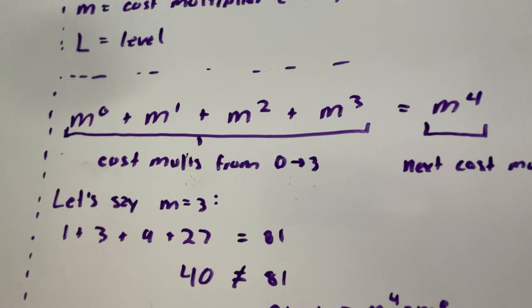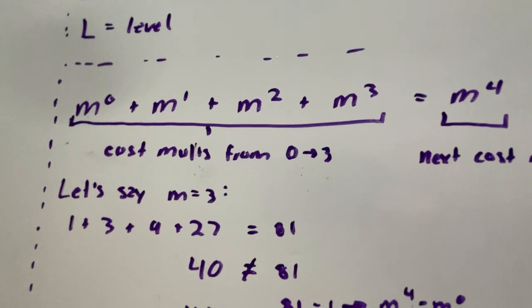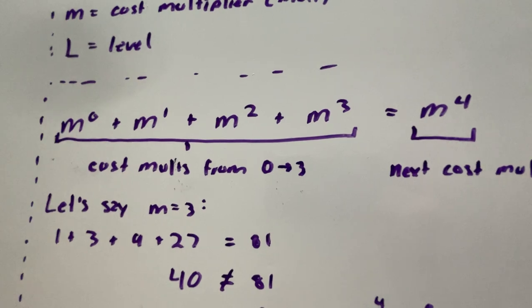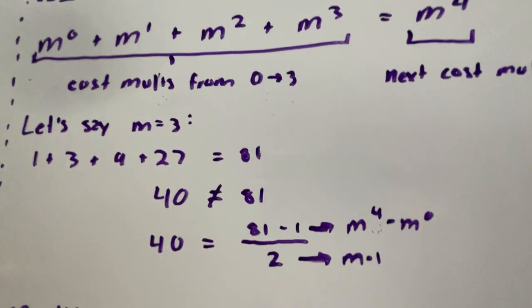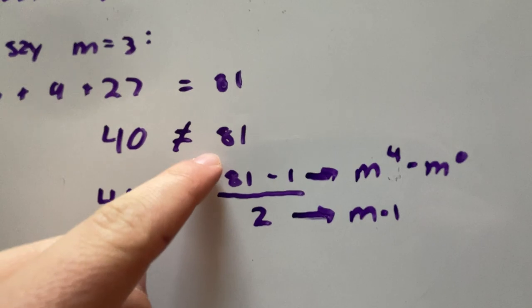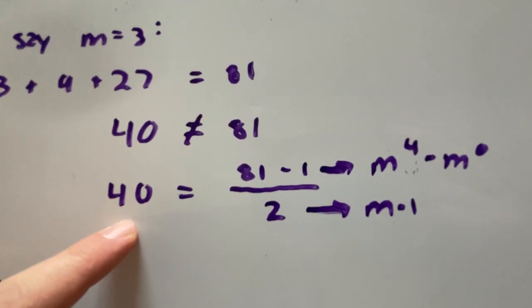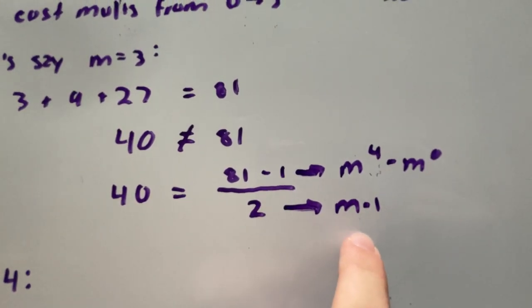But we want our m4 term to equal this term. We want to simplify this because we don't want to take any sort of sums or use for loops in order to solve for what this is. So what we can do is we notice that if we subtract 1 from 81 we get 80, and then we can divide that by 2 and that's 40.